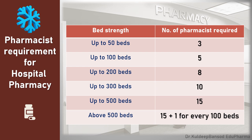For a 50-bed hospital, we can have 3 pharmacists. As the number of beds increases, the number of pharmacists required also increases. This pattern is suggested to determine the number of pharmacists inside the hospital pharmacy.